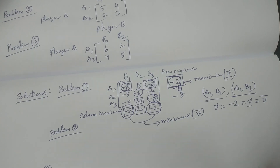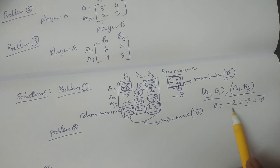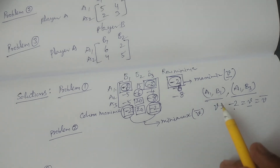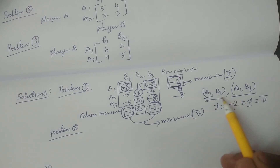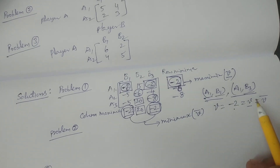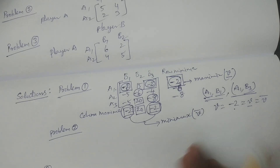Therefore the solutions are: mu equals the value of the game equals minus 2. The best strategies for player A are A1, and for player B are B1 and B3 — both give the same value. That is problem 1.